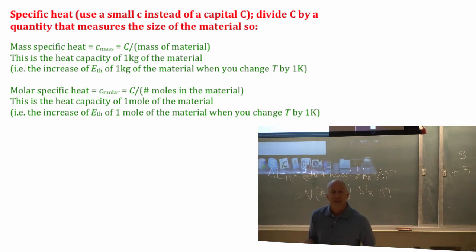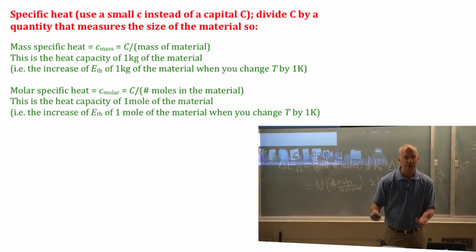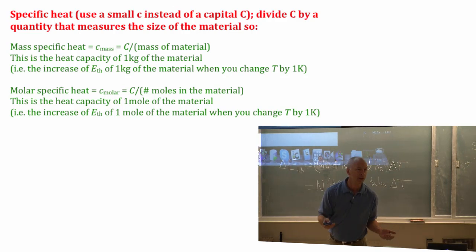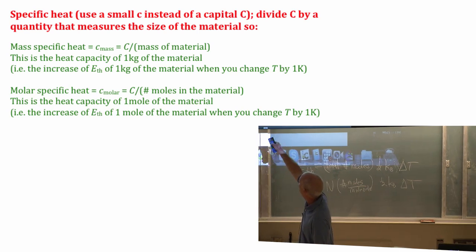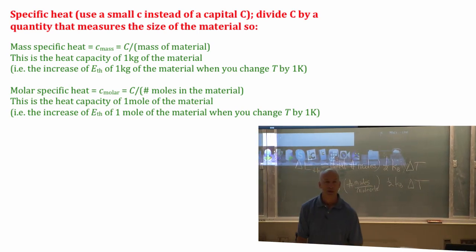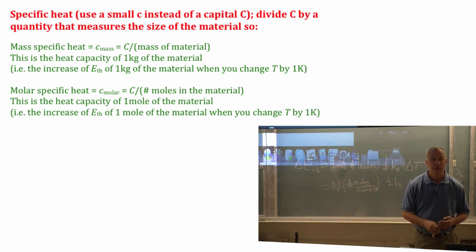So heat capacities always depend on how much stuff you have. If you have a little bit extra, the heat capacity is a little bit bigger. If you have a lot more, the heat capacity is a lot bigger. And so specific heats are defined where you divide out that result. Something that doesn't depend on N.